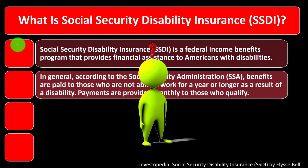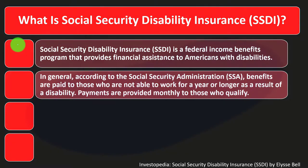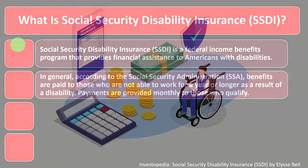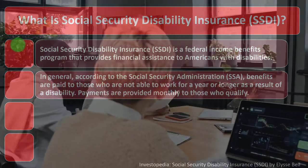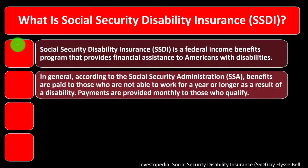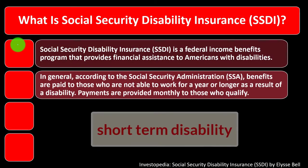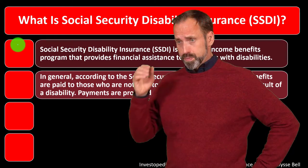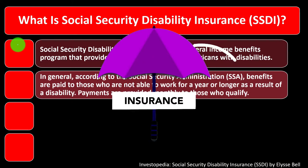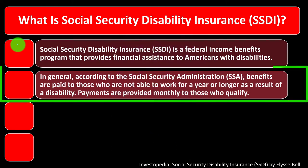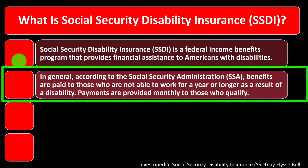We can think about short-term kinds of insurance and long-term disability. Long-term disability is more akin to classic insurance — guarding against a big financial catastrophe. On the short-term side, if we have a temporary cut in our workflow, hopefully we can self-insure to some degree by having sufficient savings. SSDI payments are provided monthly to those who qualify.